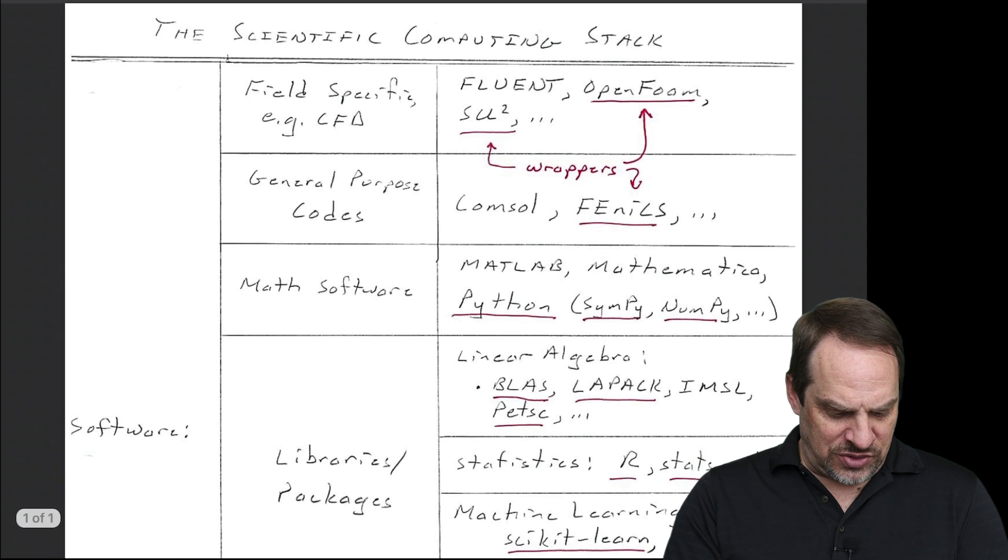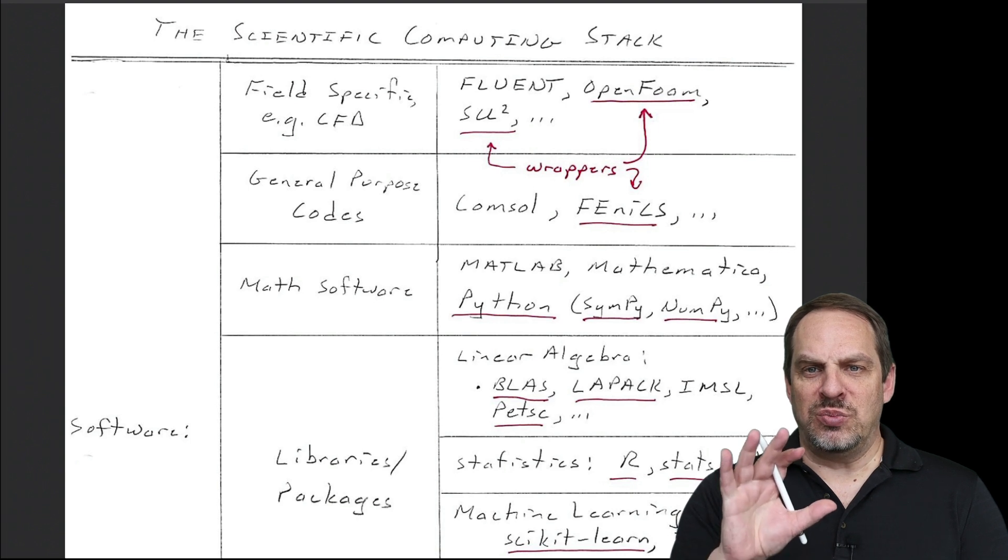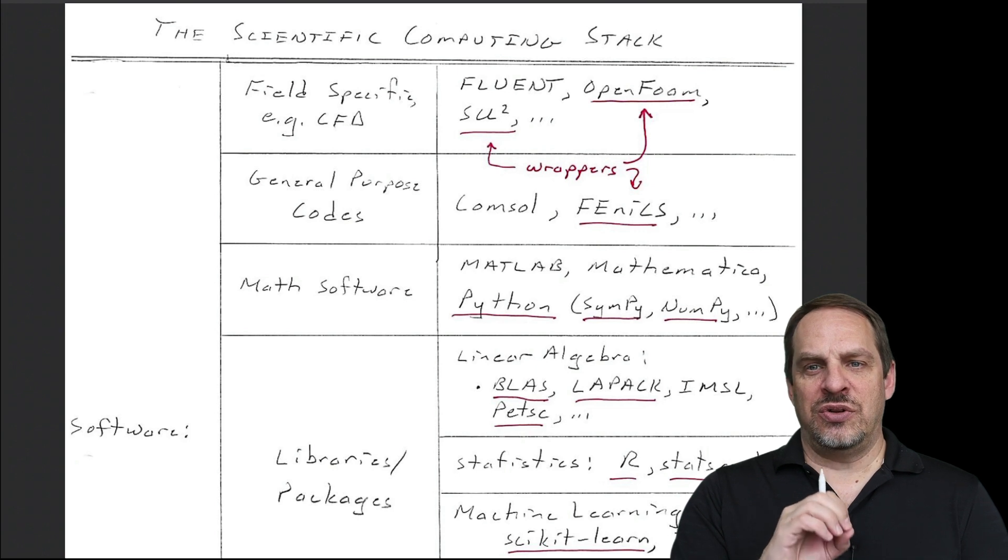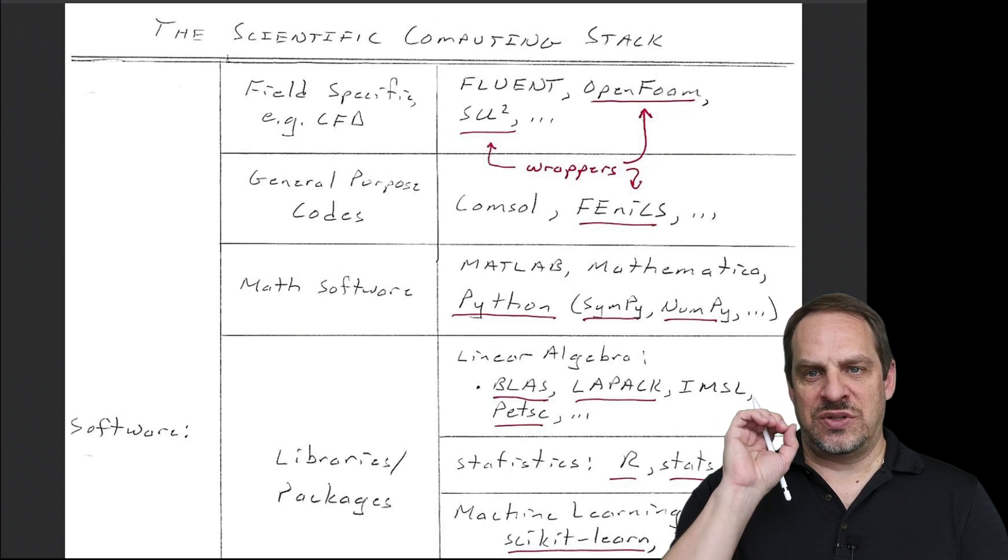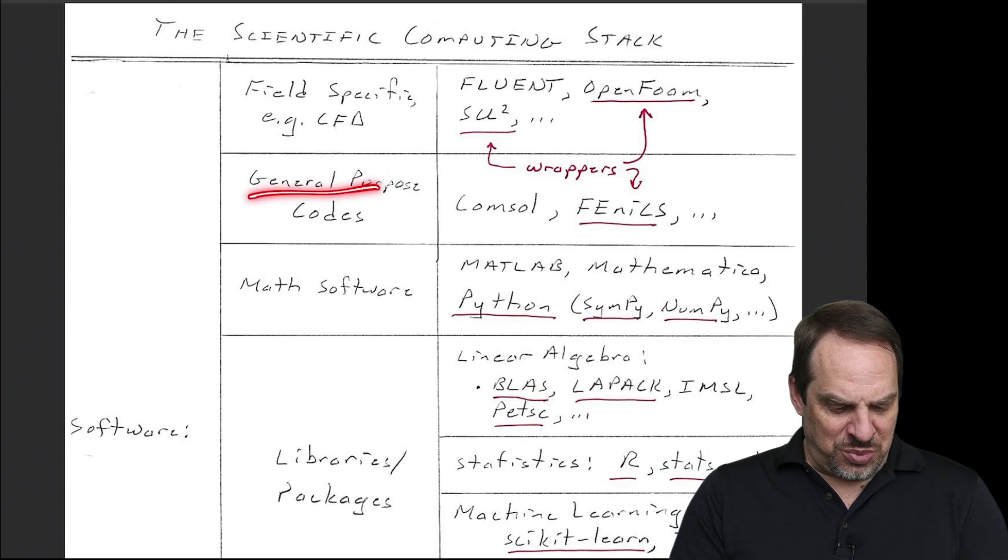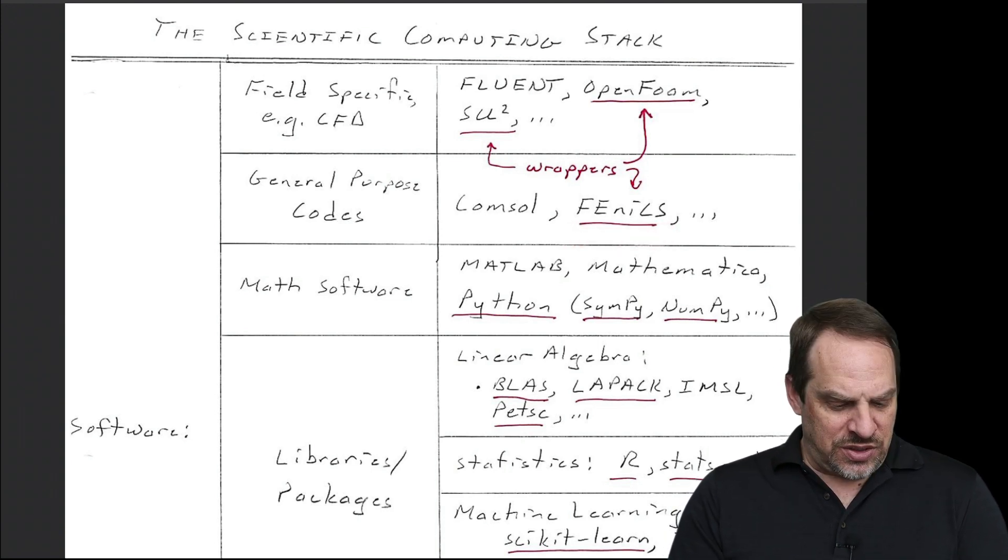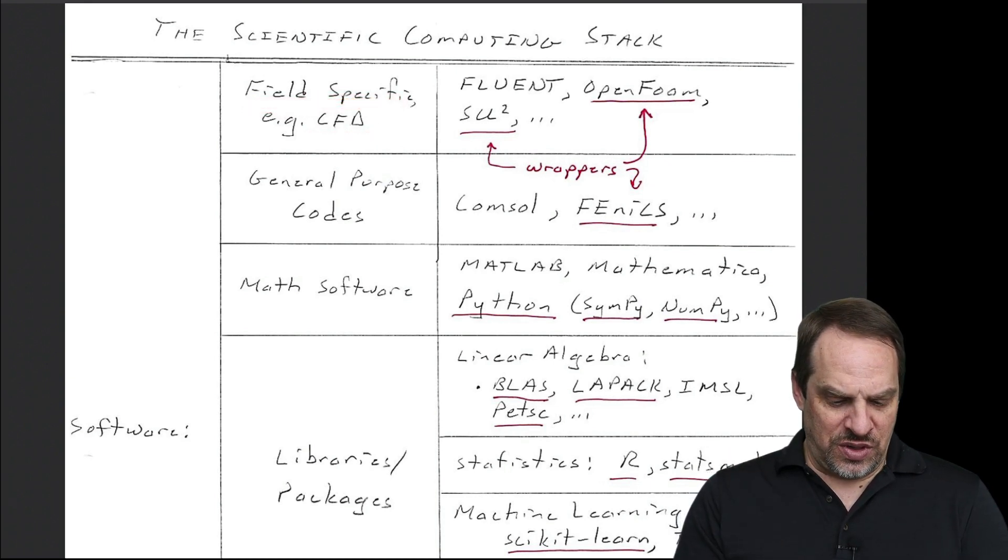As you move up the stack, you get to Math Software. So that's your MATLAB and your Mathematica. So again, this is more like what you would do on paper. You're not doing the Gauss elimination. You're not doing the method to get the eigenvalues and eigenvectors by hand, the steps. You're just putting in the matrix and saying, give me the eigenvalues and eigenvectors, and it does all the work for you. And then you have general purpose codes. We talked about COMSOL. There's also Phoenix, which is an open source code that's very similar to COMSOL. Then there's field-specific codes, like for CFD, for solid mechanics, for heat transfer, electromagnetics, and so forth. We've discussed Fluent, OpenFOAM, SU squared.